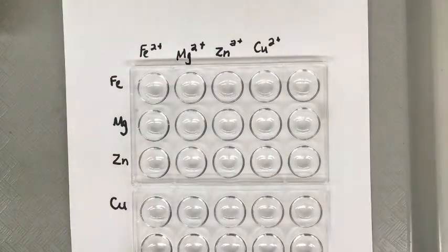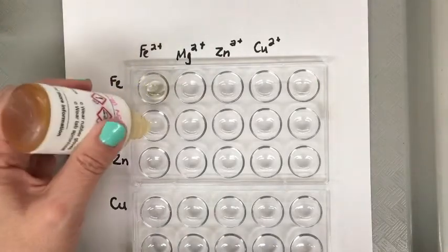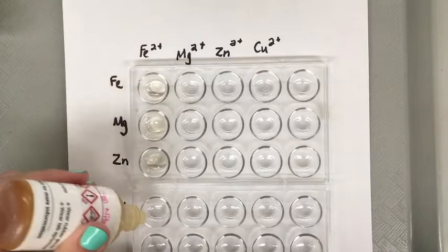First off we'll prepare our solution. In the first column I'm going to put some solution of iron ions. We'll put a few drops in each one.